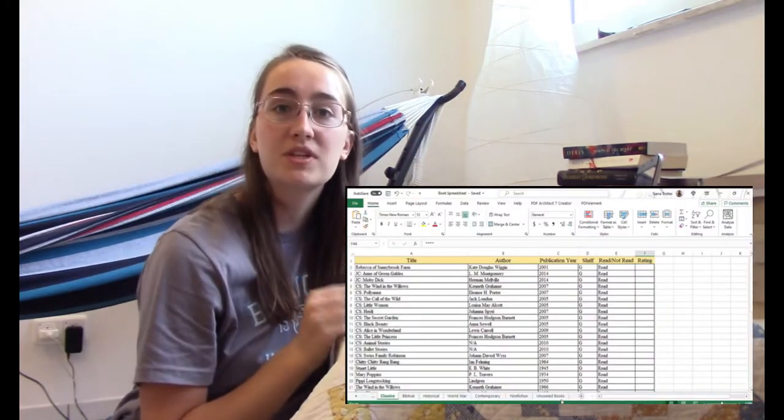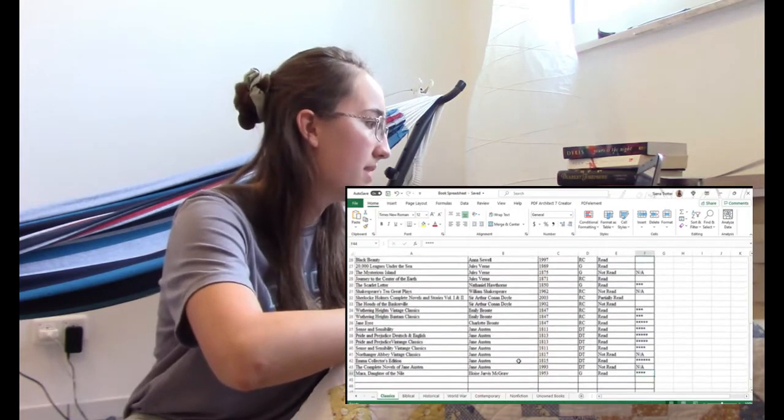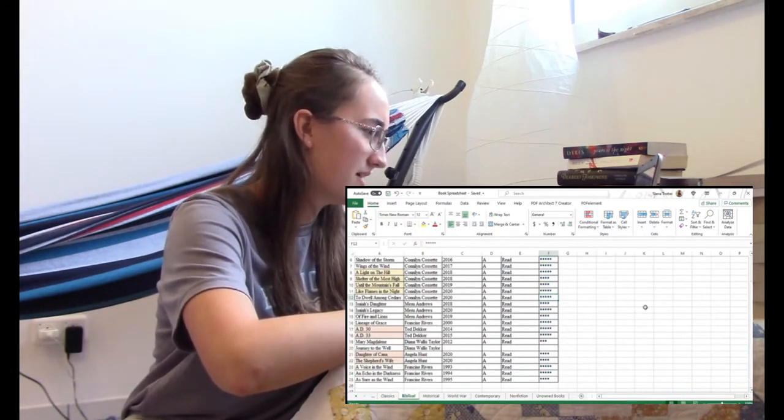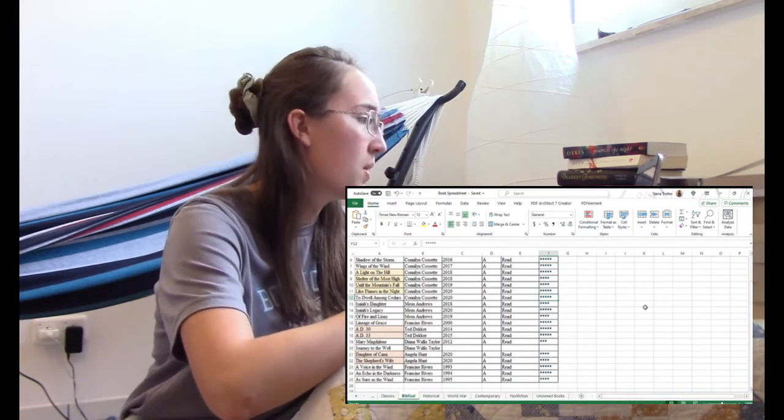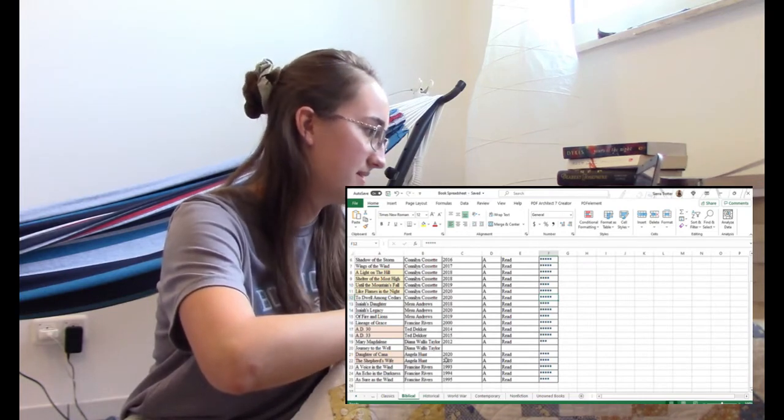Okay, so the way I have this spreadsheet broken into is by genre. So at the bottom I have different sheets, that's what they're called. So I have all of my classics. We are not shelving any new classics today.